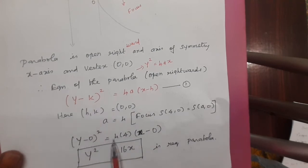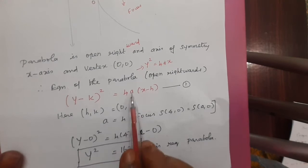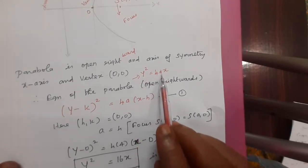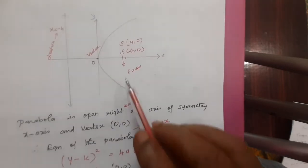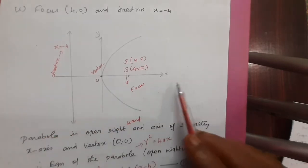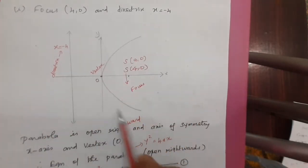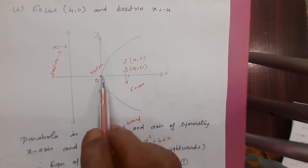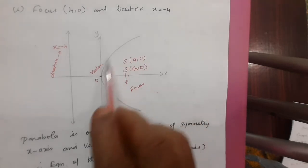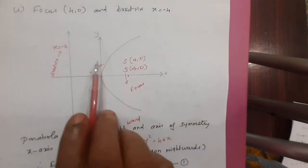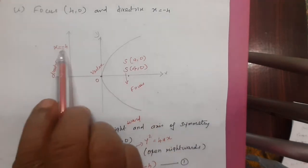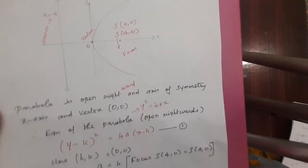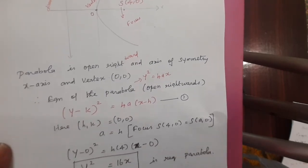Since h equals 0 and k equals 0, substituting into y squared equals 4ax: instead of a substitute 4, so y squared equals 4 times 4 times x, which gives y squared equals 16x. This is the required equation of the parabola. The diagram is very important — first draw the x-axis and y-axis, plot the focus, draw the vertex through the origin, and note that the directrix x equals minus a is opposite to the focus.